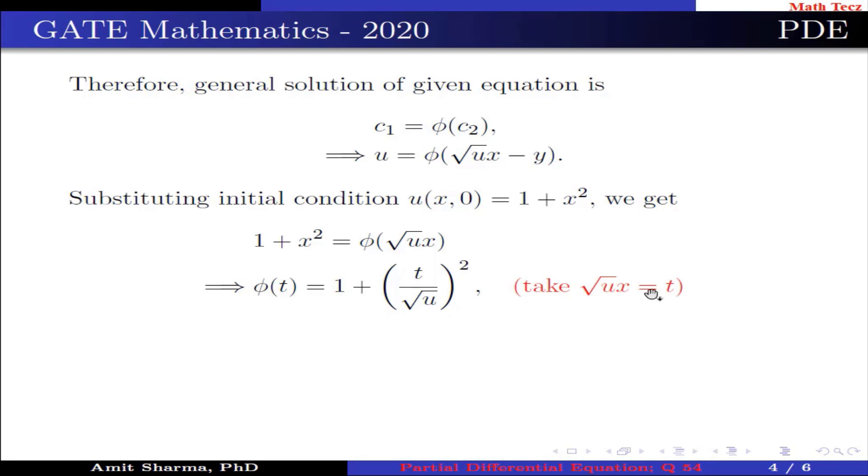Here we take √u x = t which can be further simplified as φ(t) = u + t²/u, which implies φ(√u x - y) = u + (√u x - y)²/u.